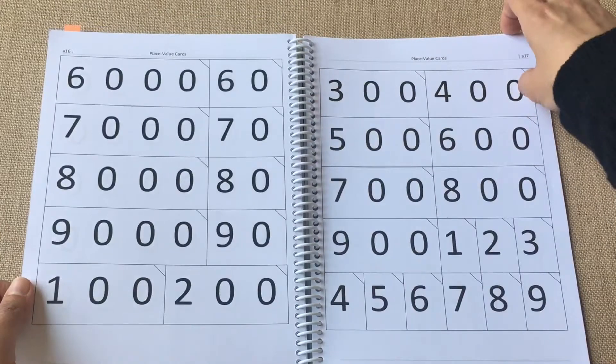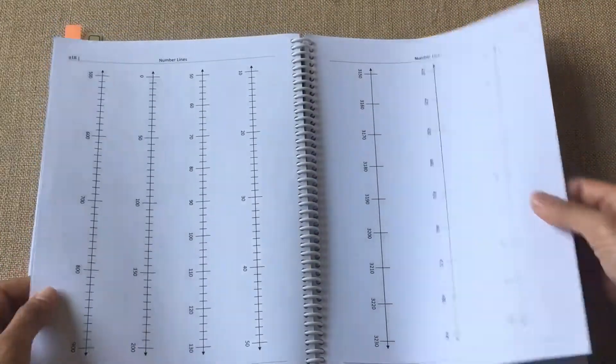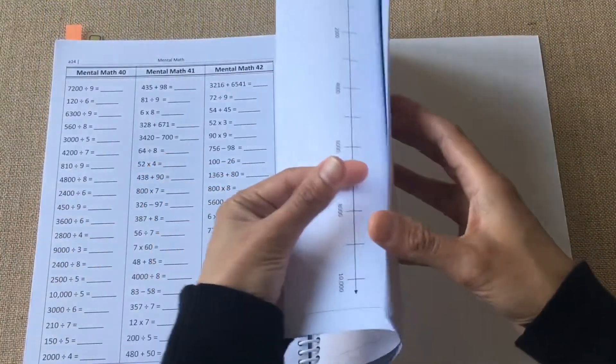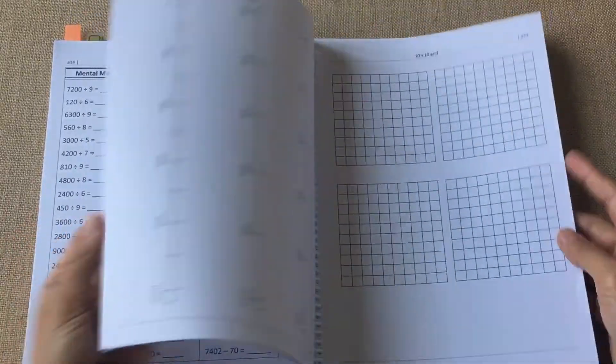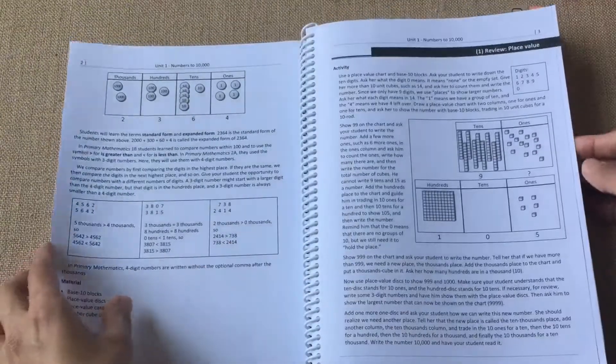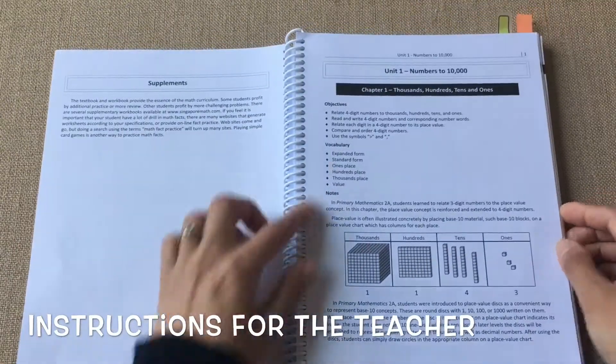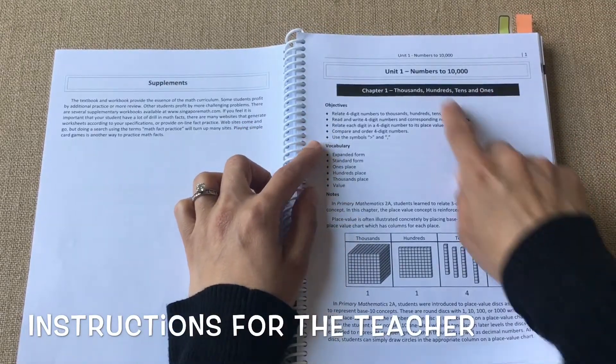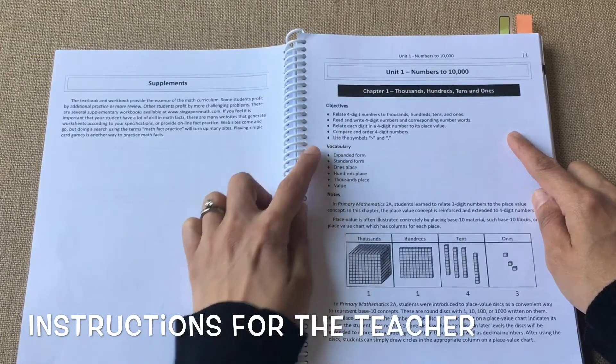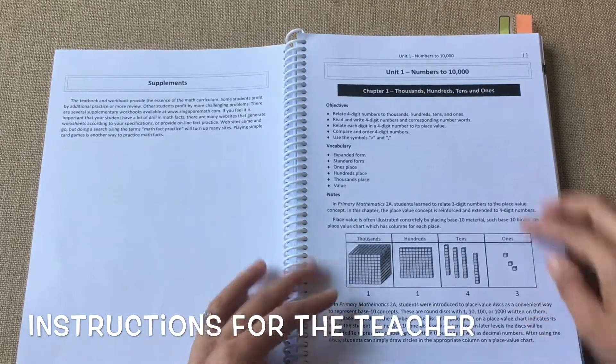They're good for the whole semester. They have number lines and grids and everything. You can print these out and keep them handy. Whatever you need for that entire semester is laid out here in the beginning. Each lesson is introduced with the objective, vocabulary terms that will be used, and notes for the teacher.